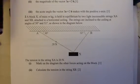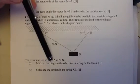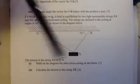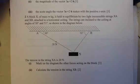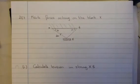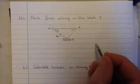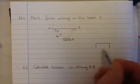So here's our diagram. The tension in the string XA is 20. Mark on the diagram the other forces acting on the block. Okay, so I've done a little sketch here of our block. So if we have a look at X, there are actually three forces acting on it. One's already marked in for us.